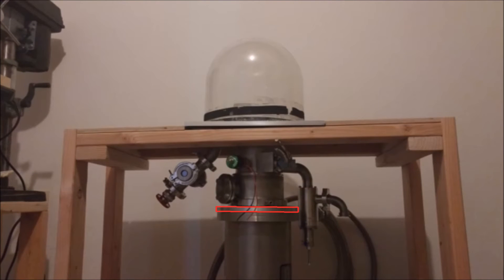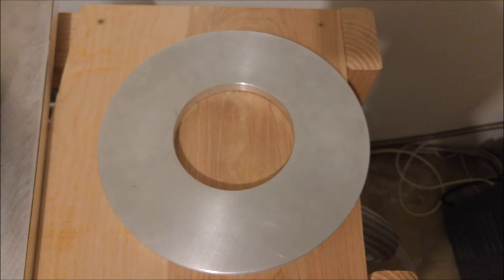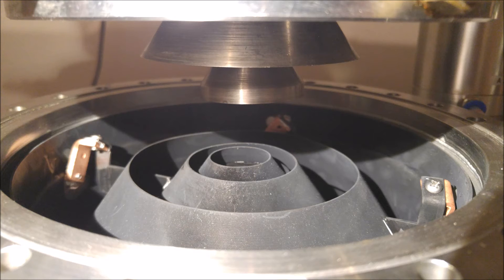This is the adapter for the cryopump to the valve assembly. It started as a 1 foot by 1 foot plate of aluminum. We milled the outer diameter and then turned the inner diameter on a lathe. This is where the adapter fits on the chamber.